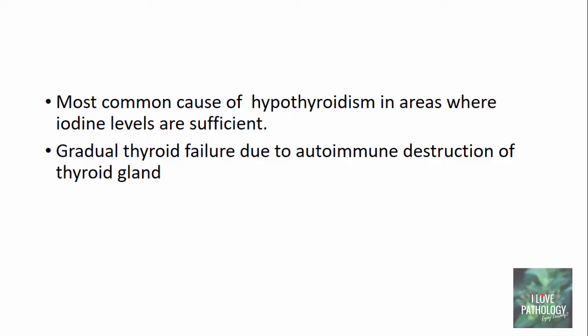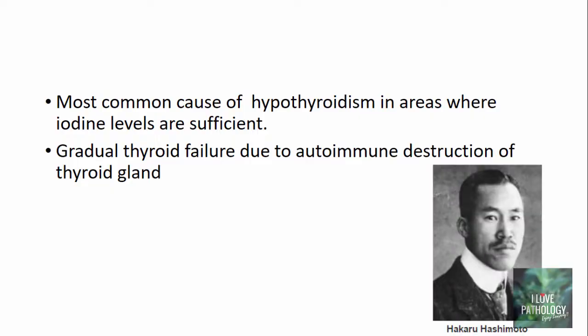Let me tell you how this disease was identified. Way back in the year 1912, a young Japanese surgeon by the name Hakaru Hashimoto, who was very much interested in thyroid diseases, examined surgical specimens and found that some thyroid diseases had peculiar features. What he called it was struma lymphomatosa, because he found that the thyroid gland had lots of infiltration by lymphocytes. He was very sure he had found a new disease but couldn't give it a proper name. It was only after his death in the late 1930s and early 1940s that people began to identify such diseases throughout the world and the name Hashimoto's Thyroiditis was given.